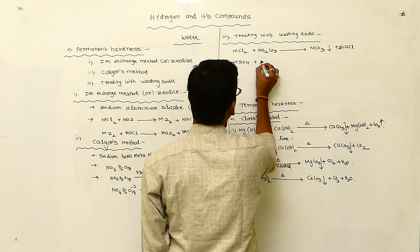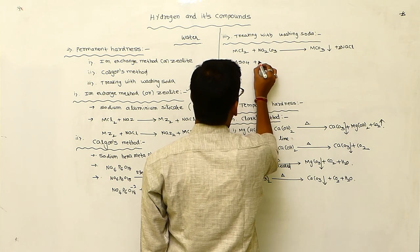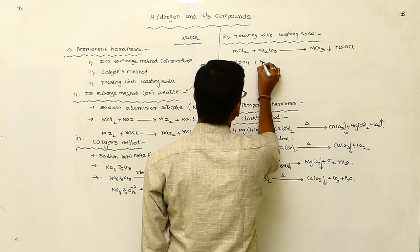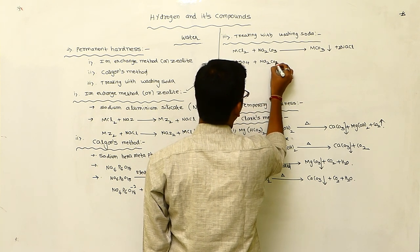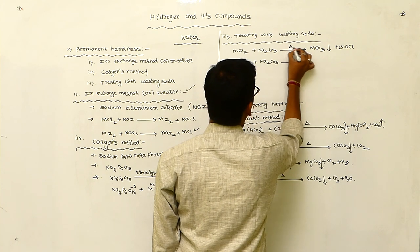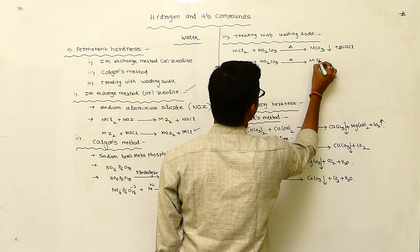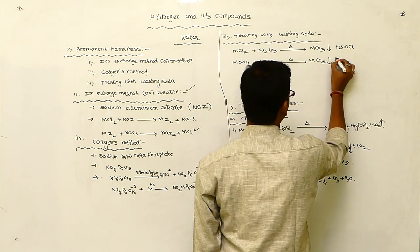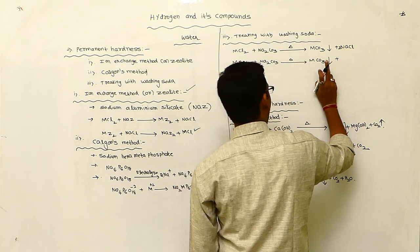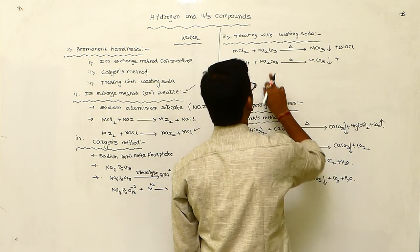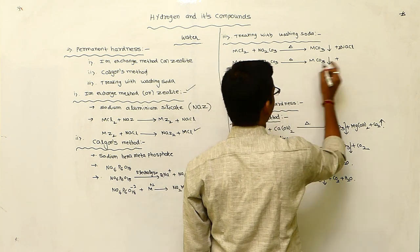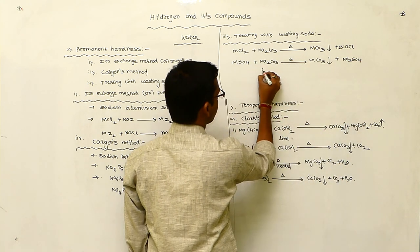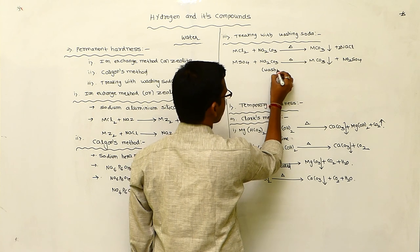MSO₄, such as MgSO₄ — magnesium sulfate — reacts with washing soda, which is sodium carbonate Na₂CO₃. It gives MCO₃, a metal carbonate, which is insoluble and appears as a precipitate. The remaining product is sodium sulfate Na₂SO₄. Here, Na₂CO₃ is called washing soda.